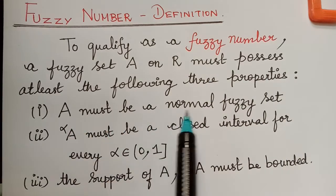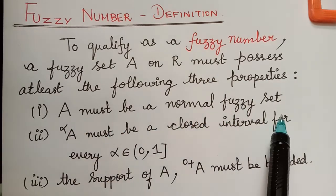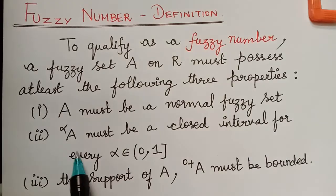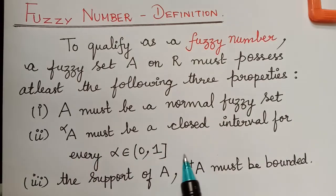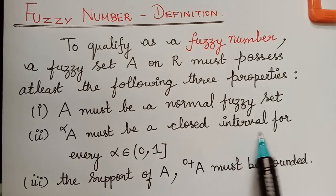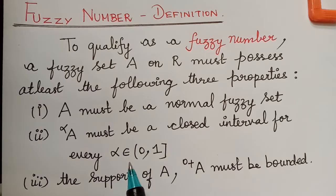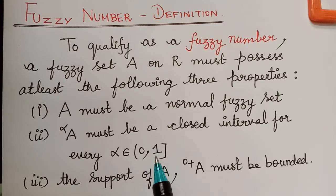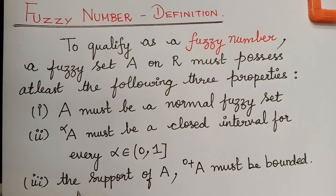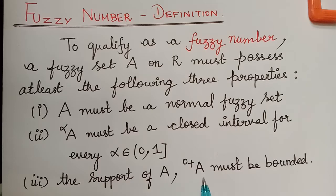A must be a normal fuzzy set. The alpha cut of A must be a closed interval for every alpha element of the open interval (0, 1]. And the third condition is the support of A, that is, the strong zero cut of A must be bounded.